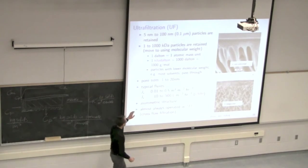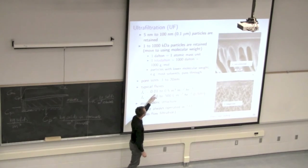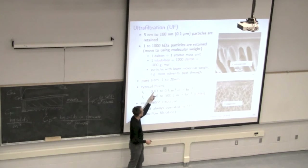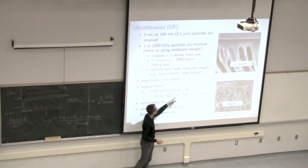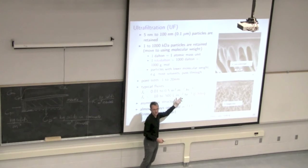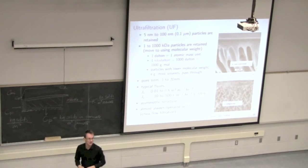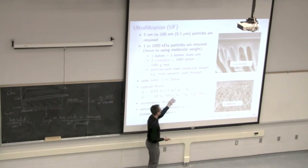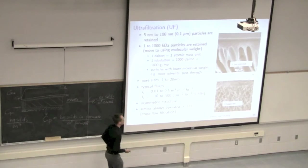Typical fluxes in ultrafiltration are expressed in meters cubed per meter squared per hour. More commonly we use liters per meter squared per hour — abbreviated LMH — since working in meters cubed gives very small numbers. Liters per meter squared hour is the standard unit for membrane flux. You might get up to 500 LMH at most, which represents 500 liters per hour for a one-square-meter membrane, and that's on the high end — these are actually very low fluxes in the context of filtration generally.